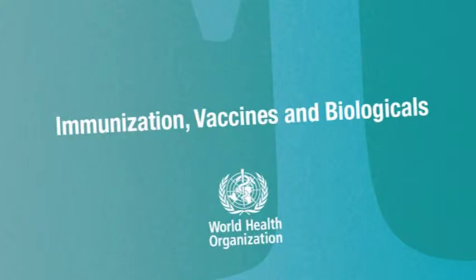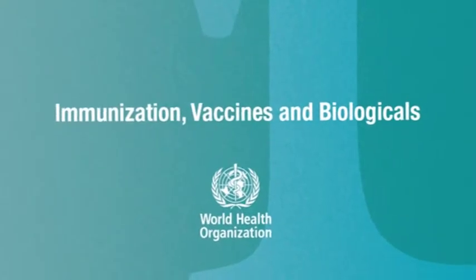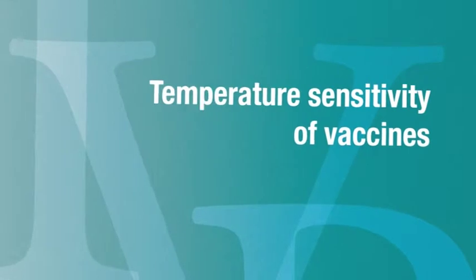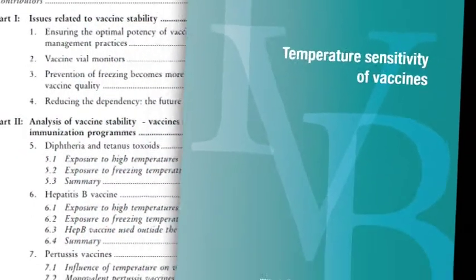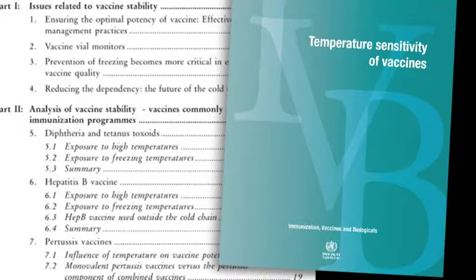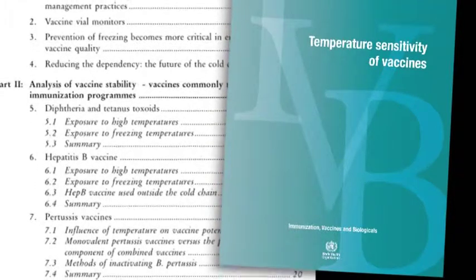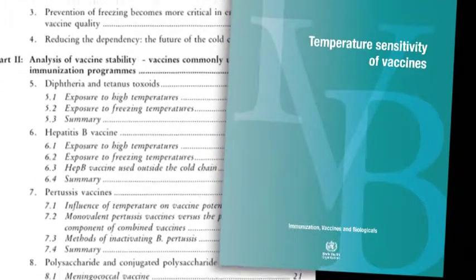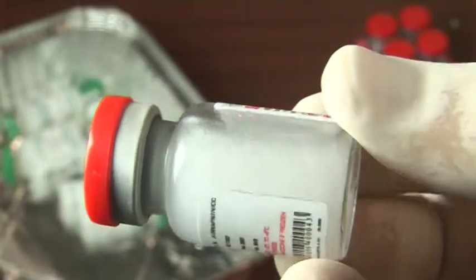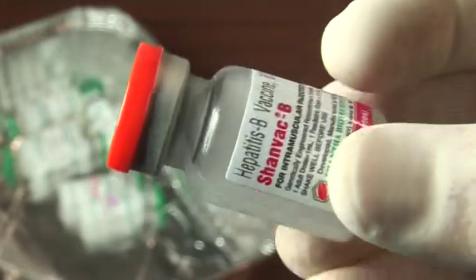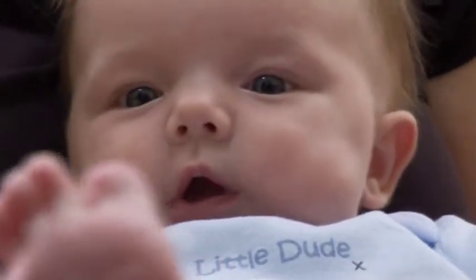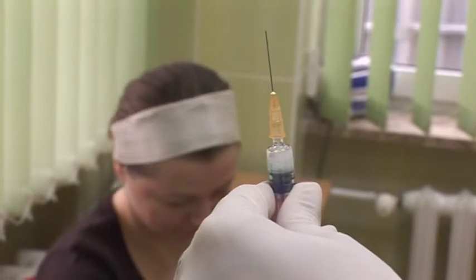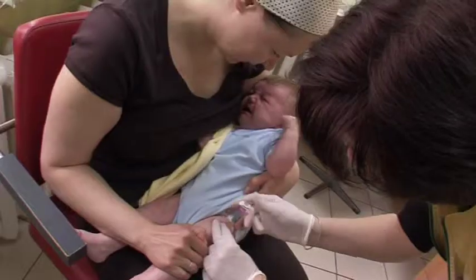World Health Organization guidelines recommend that liquid formulations of vaccines containing diphtheria, pertussis, tetanus, hepatitis B, hemophilus influenzae type B, and their combinations should not be frozen. Freezing of these aluminum-based adjuvant vaccines provokes loss of potency and, as a consequence, can result in compromised protective immunogenicity in recipients.